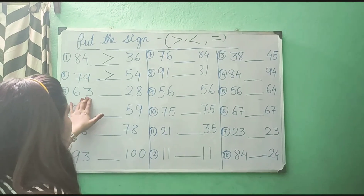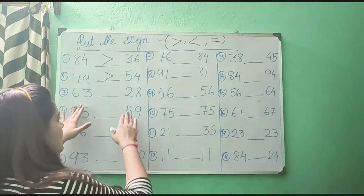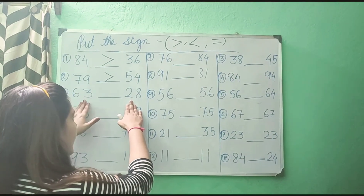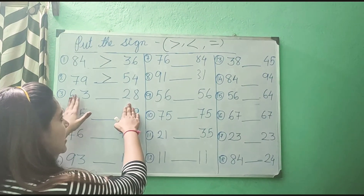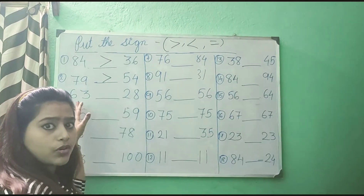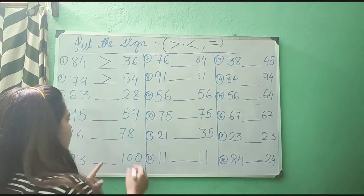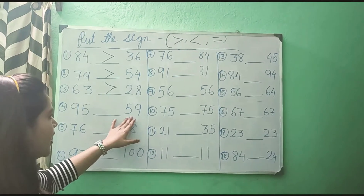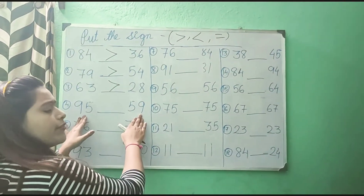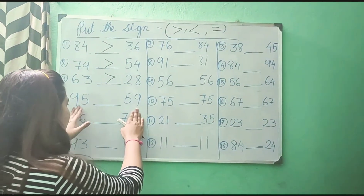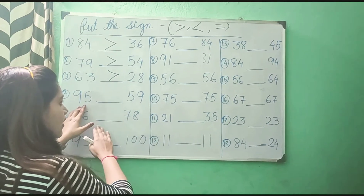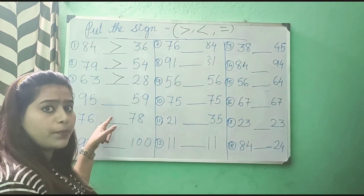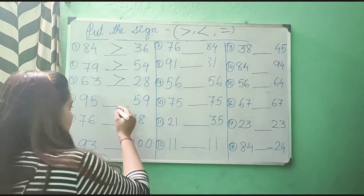Now see, 63 and 28 — which is the bigger one? 63, right? So here again, this number is the greater one, so we will put greater than sign here. Now, 95 and 59 — which is the bigger one? 95. So again, it is bigger than this number, so we will put greater than sign.